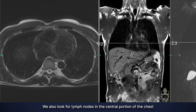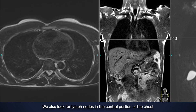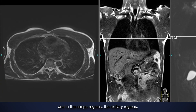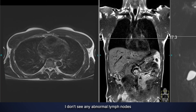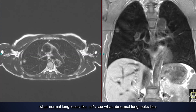We also look for lymph nodes in the central portion of the chest and in the armpit regions — the axillary regions — just like we did in the neck. I don't see any abnormal lymph nodes centrally, nor do I see them in the axillary regions on both sides.